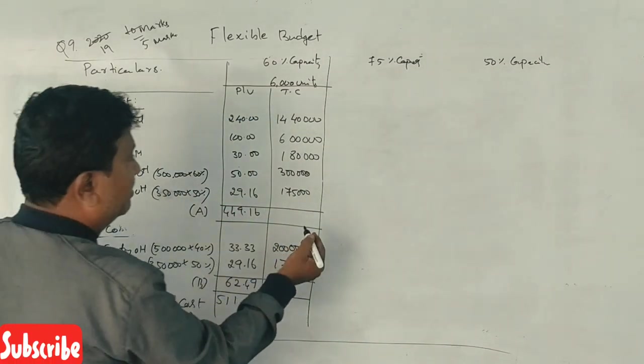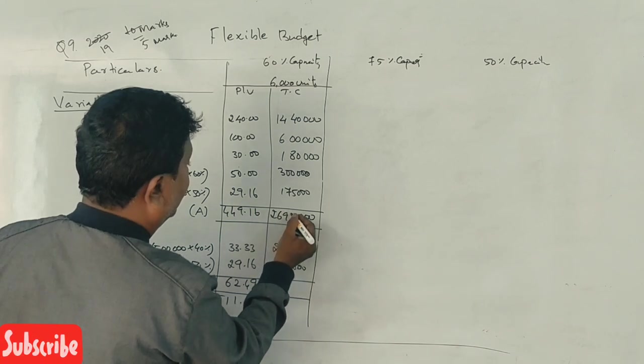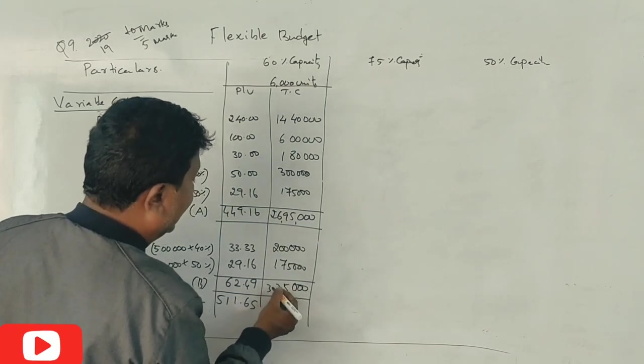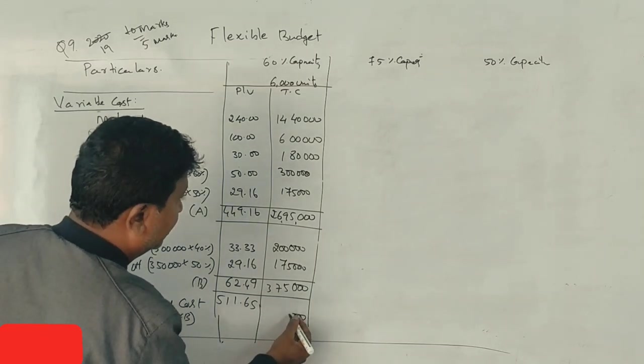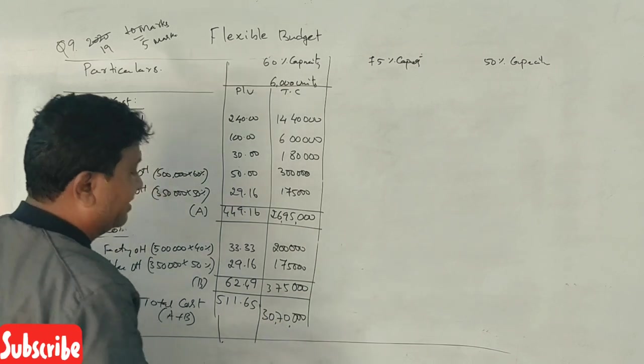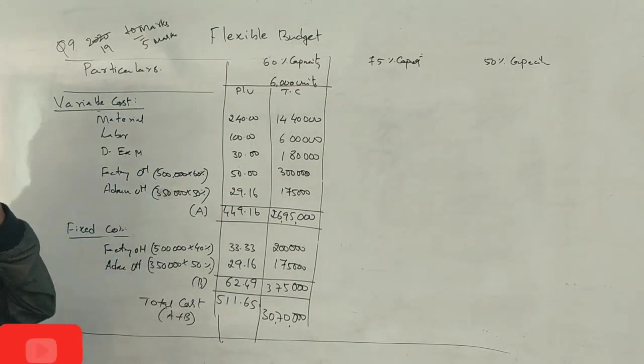Fixed cost: Factory overhead 2 lakhs, administration 1 lakh 75,000. Total fixed cost 3 lakhs 75,000. Grand total 30 lakhs 70,000.